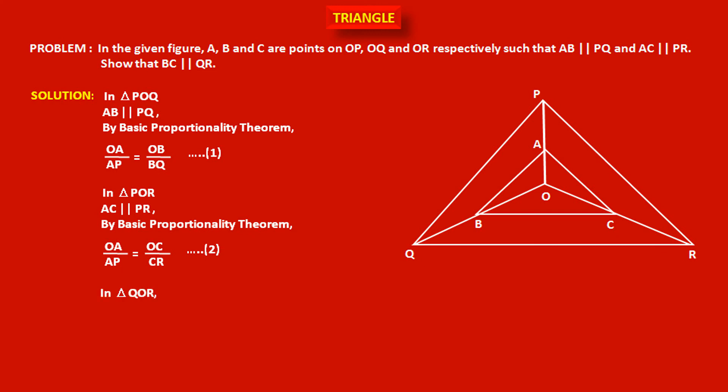Now consider triangle QOR. In this triangle, two sides OQ and OR are already divided in the same ratio. That means OB upon BQ is equal to OC upon CR. This is because, just see statement number one and two — both have the same left-hand side, OA upon AP. So the right-hand sides are also equal. From one and two, we can say that OB upon BQ is equal to OC upon CR.